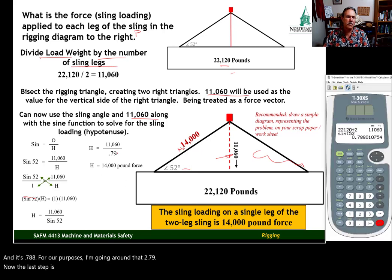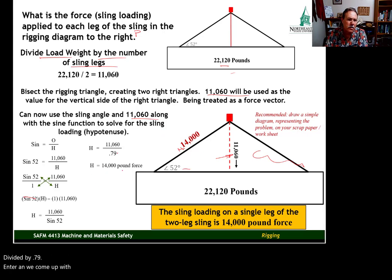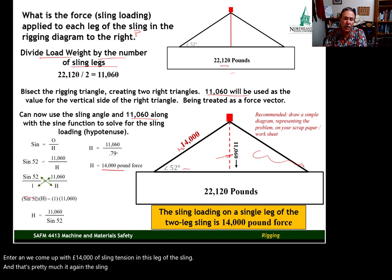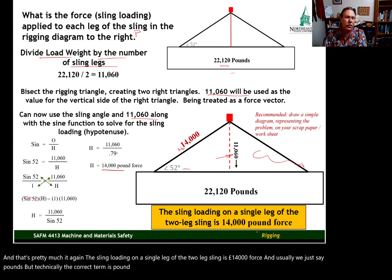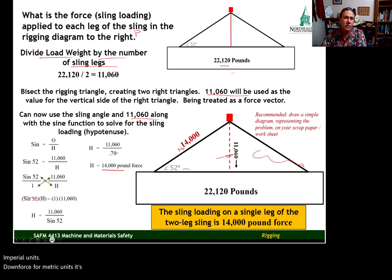Now the last step is dividing the 11,060 by 0.79. Divided by 0.79, enter. And we come up with 14,000 pounds of sling tension in this leg of the sling. And that's pretty much it. Again, the sling loading on a single leg of the two leg sling is 14,000 pound force. And usually we just say pounds, but technically the correct term is pound force. When we do a metric problem, they have different units. And for imperial units, we're pound force. For metric units, it's newtons. But that's it for this first example.